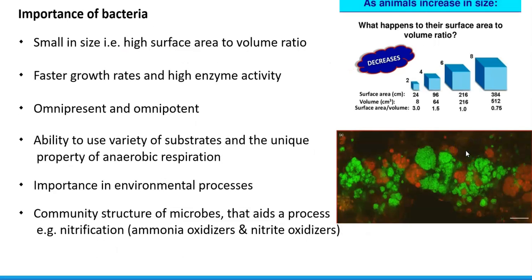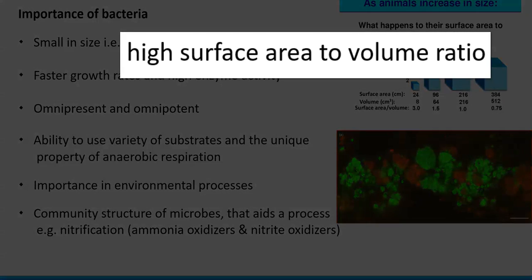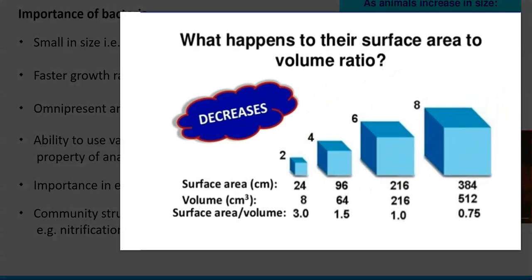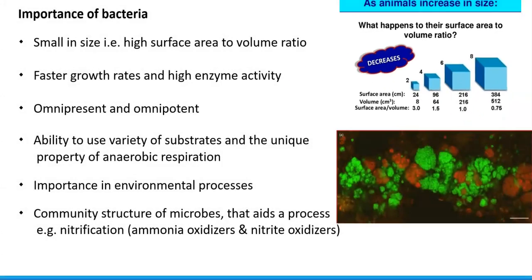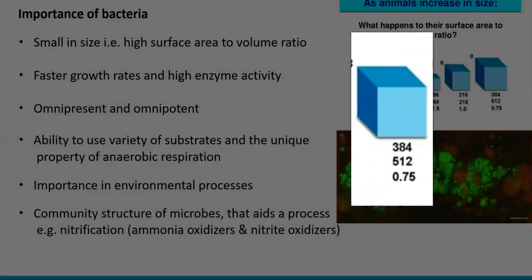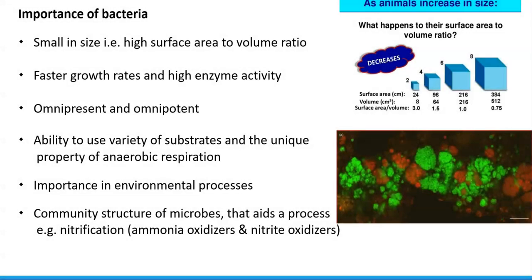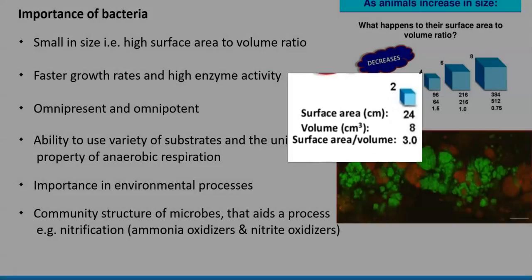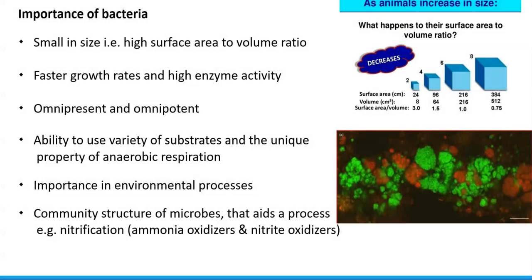Before understanding bacterial metabolism, we look at the importance of bacteria in living systems. Bacteria are small in size, meaning they have a high surface area to volume ratio. On the right-hand side, you can see different squares — the large square has a very low surface area to volume ratio, while the small square has a high surface area to volume ratio. Similarly, small-sized bacteria have a very high surface area to volume ratio. As size decreases, the surface area to volume ratio becomes higher, which greatly aids microbial metabolism.